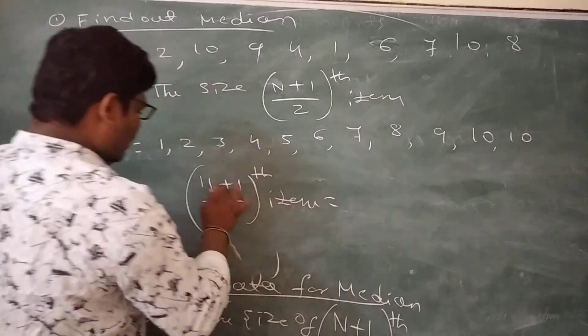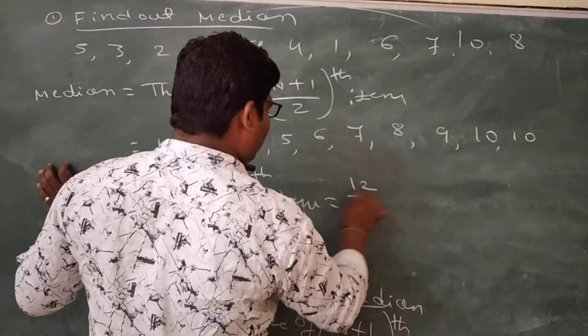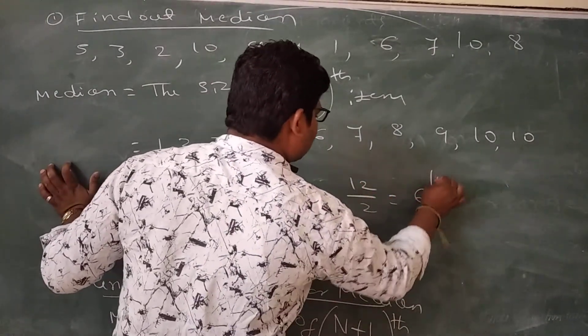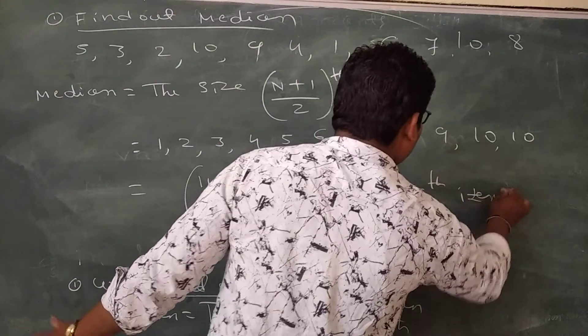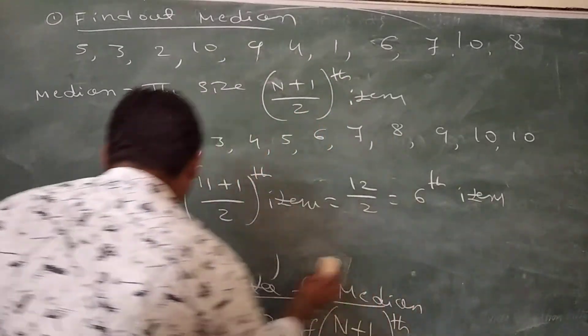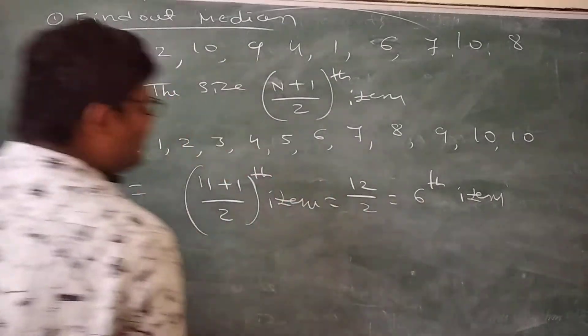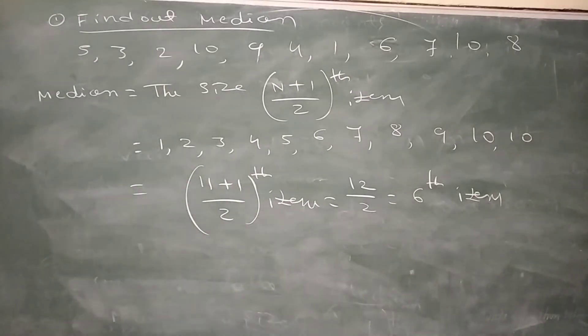Therefore, 11 plus 1, 12. 12 by 2, therefore, 6th item, which is 4. Now selected item is 6, what is the median? The median, 6th item. For example.